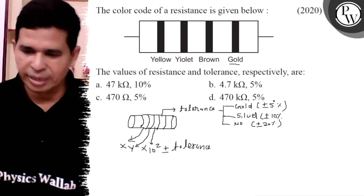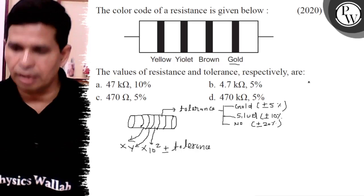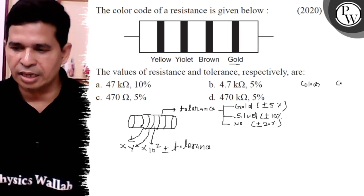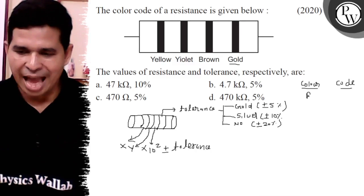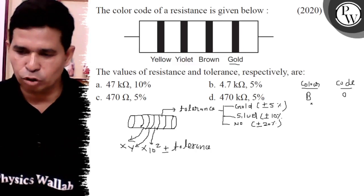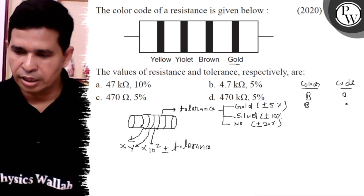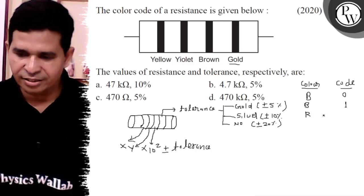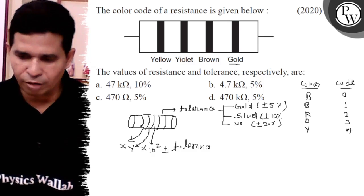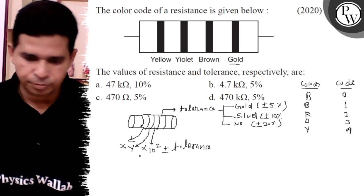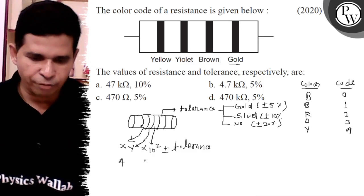Now, what is the value of X, Y, Z? We know that here the color and here the code for black, it is 0, brown, it is 1, red for 2, orange for 3, yellow for 4, so our first color is 4, so value of X is 4.